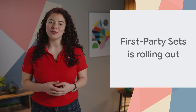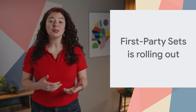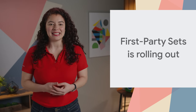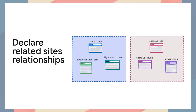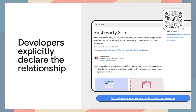First-Party Sets is starting to roll out to stable. First-Party Sets is part of the Privacy Sandbox — it is a way for organizations to declare relationships among sites, so that browsers allow limited third-party cookie access for specific purposes. As part of this, Chrome is implementing and extending the Storage Access API, allowing a site to request access to their cookies in a third-party context.